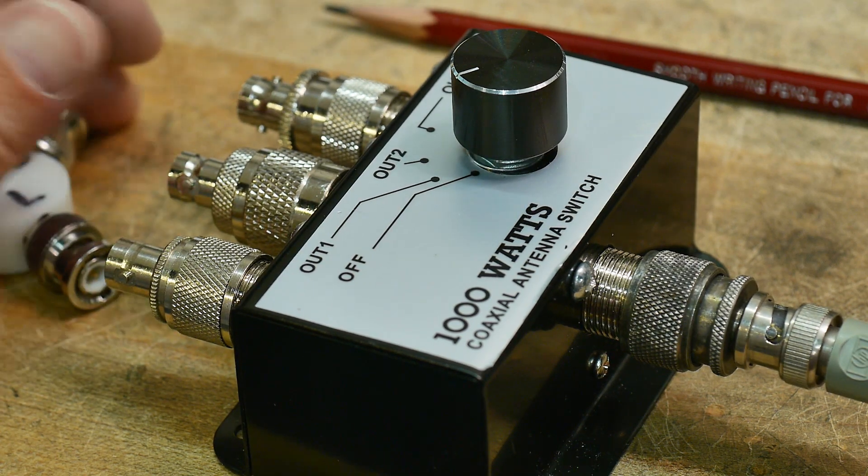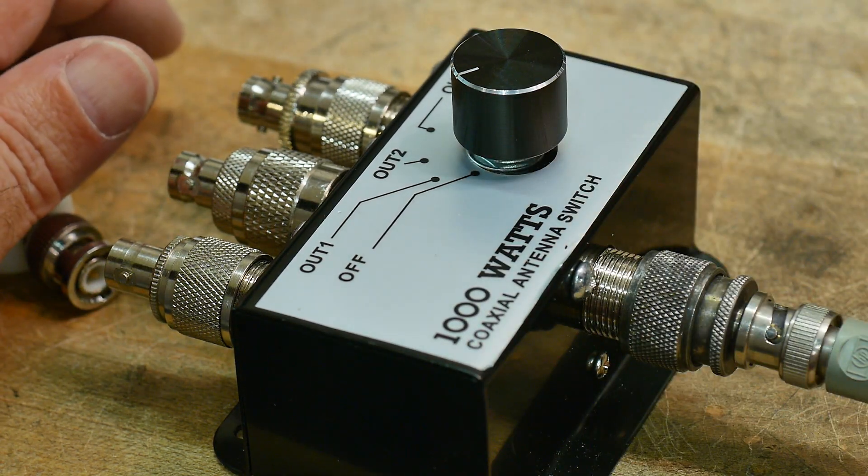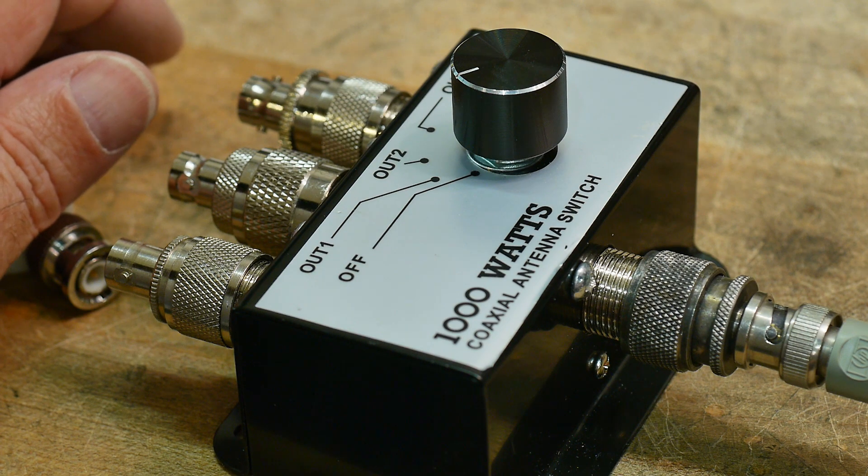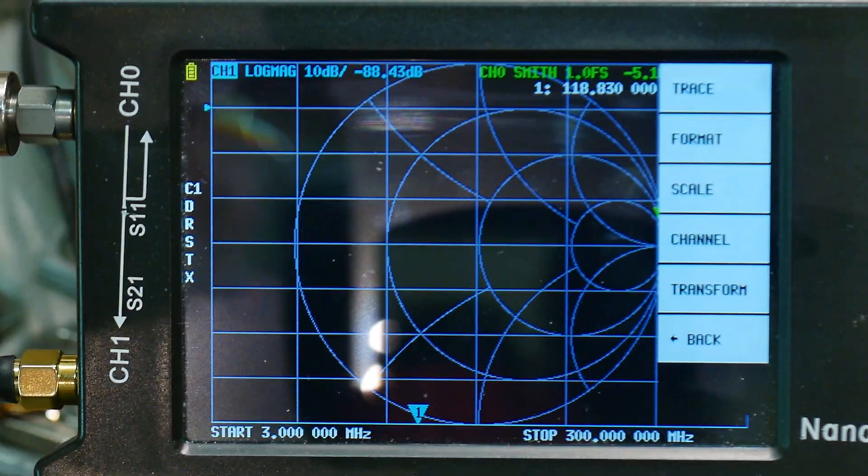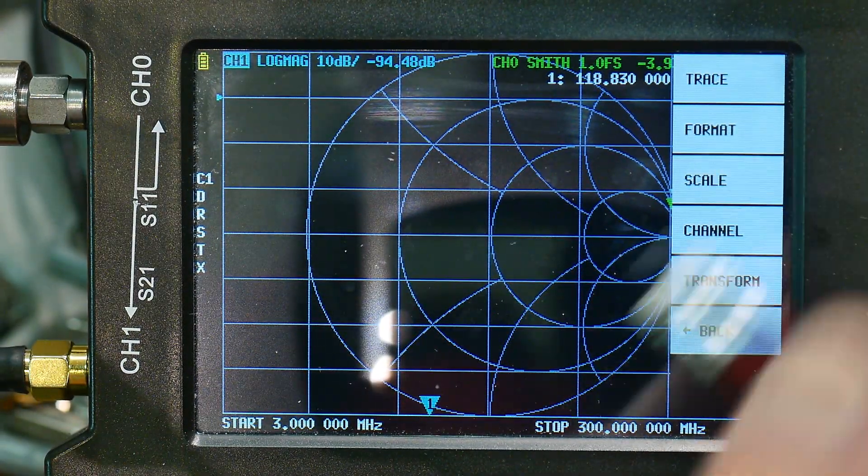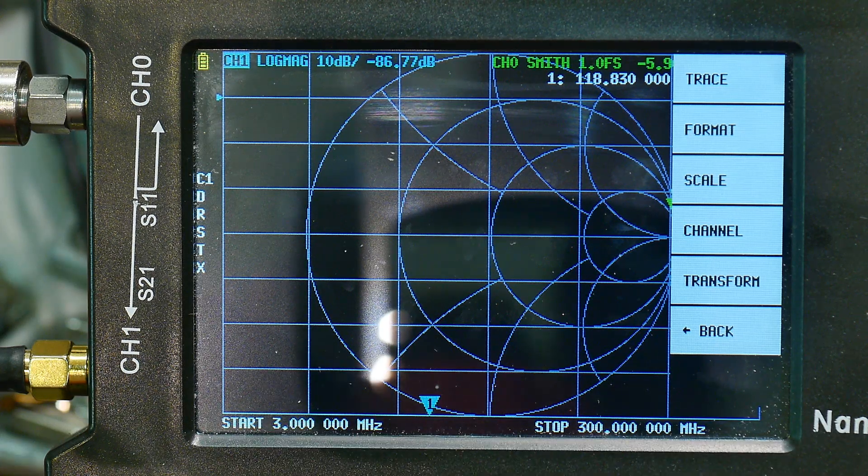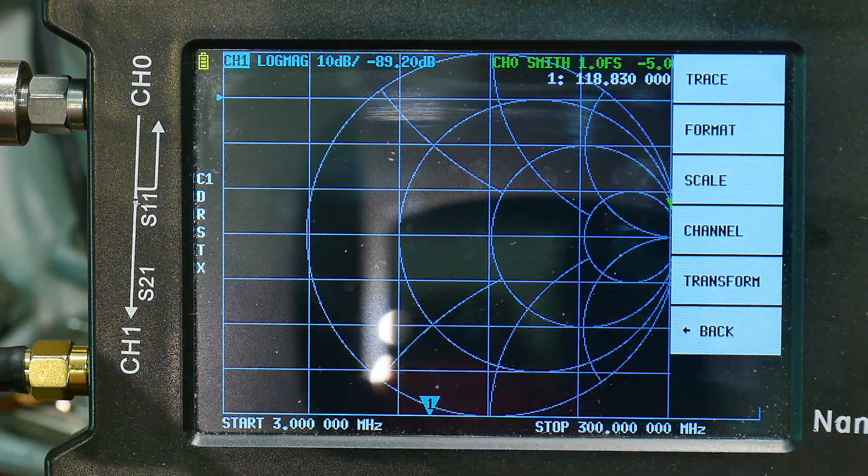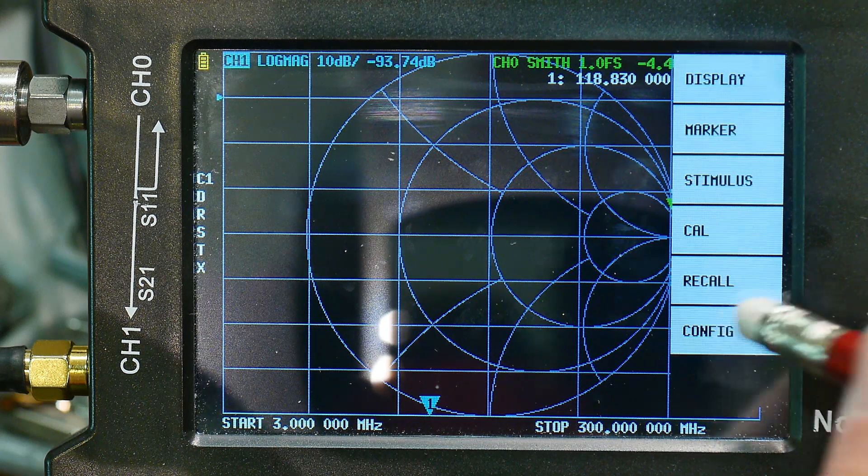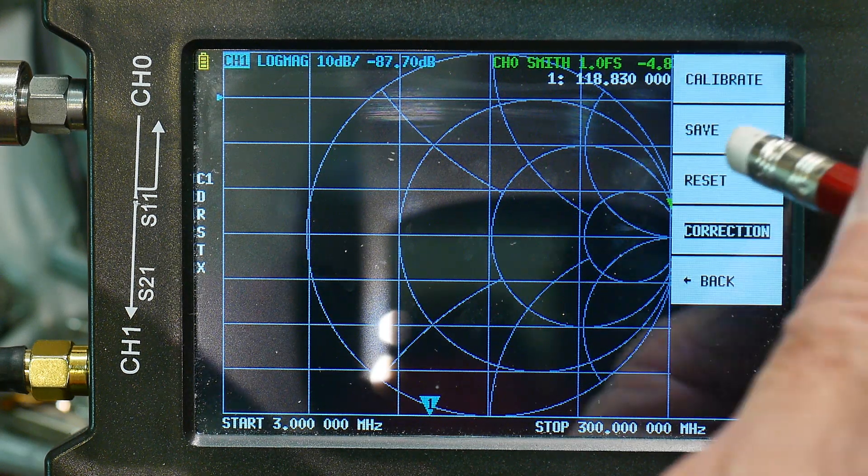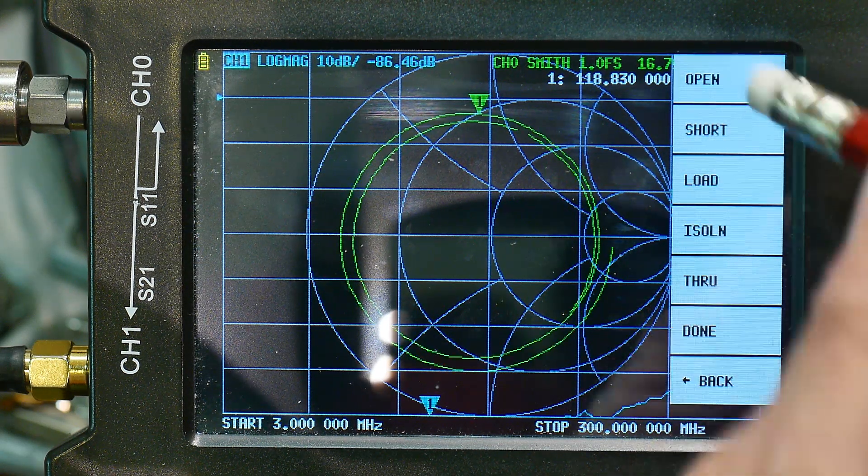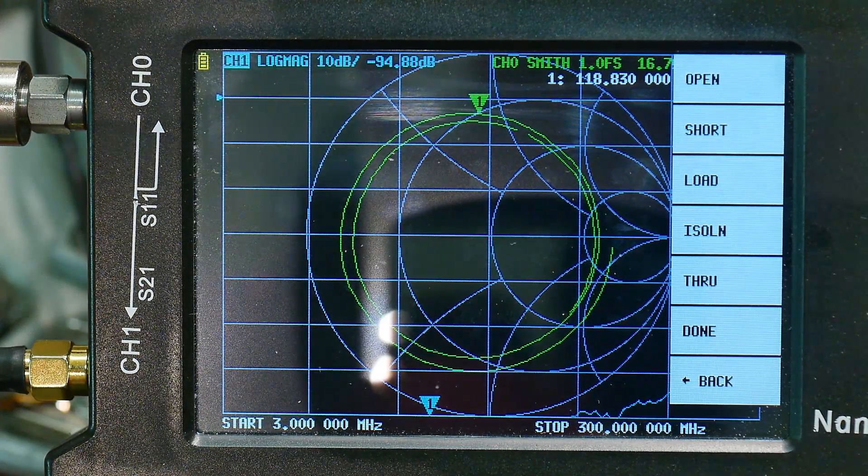And so I will go to the nano VNA. Nano VNA is over here. I'm going to... Oh, so first I have it set up to three to three hundred megahertz. So that's kind of the range of these connectors. Three to three hundred megahertz. I'm going to cal. I'm going to do reset. I'm going to do a calibrate. And now I'm going to use...